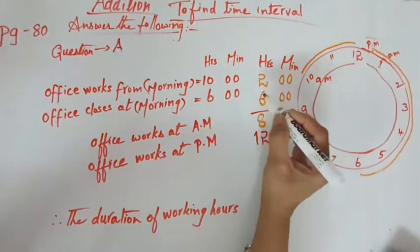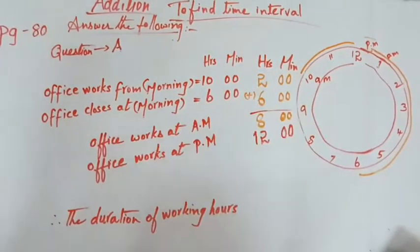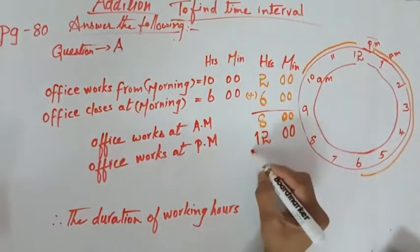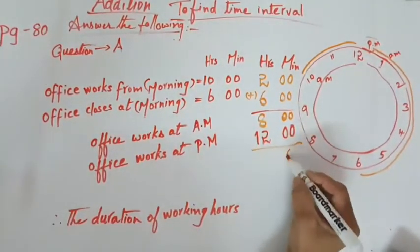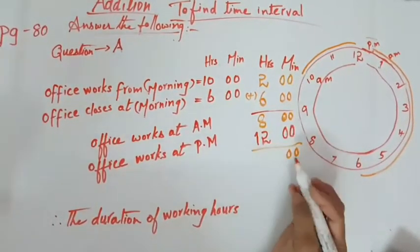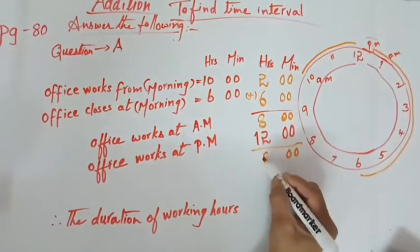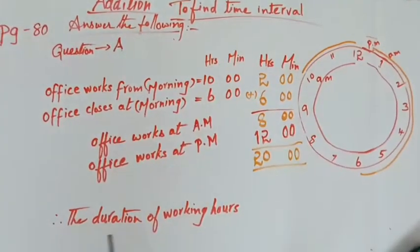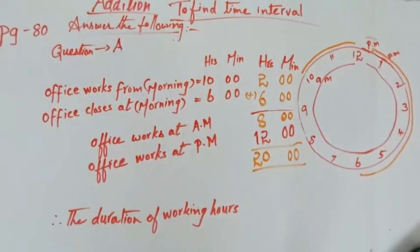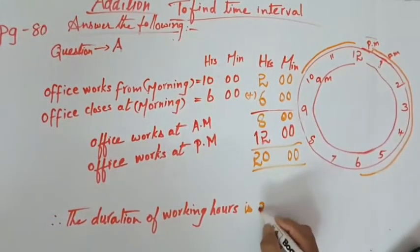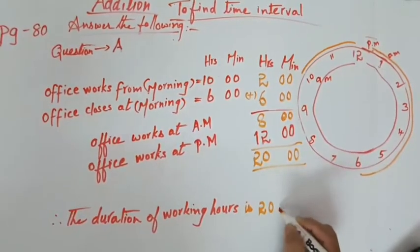Now we have to add. This is an addition sum. Now look at here, we have to add here. Minute is 0 here, and then 12 plus 8, it is 20. So the duration of working hours is 20 hours.